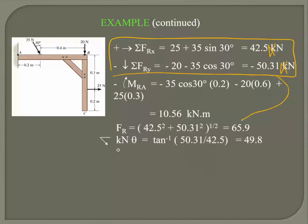Once we have the sum of all forces in x and y, we can get the resultant and the angle. Getting the resultant and angle is relatively straightforward. That gives us FR, and we also know the angle.